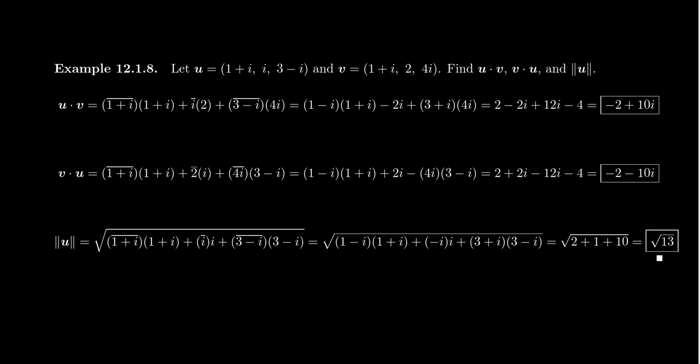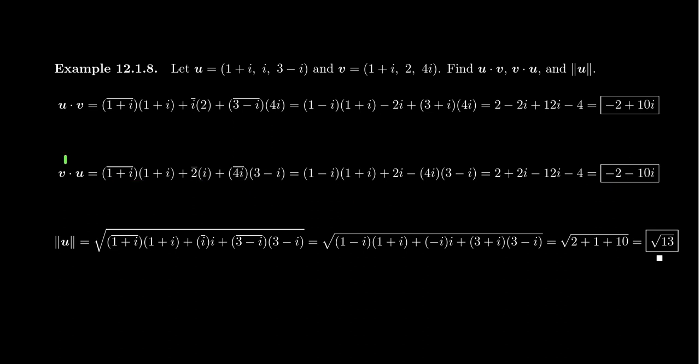If you switch the order of the Hermitian product and take v·u, this changes the final result, because now you take the conjugate of the other term — whoever is in the first position is the one whose conjugate you take. Going through the calculations, you end up with −2 − 10i, which is the conjugate of the previous result. So v·u = (u·v)* — the Hermitian product is conjugate-symmetric.